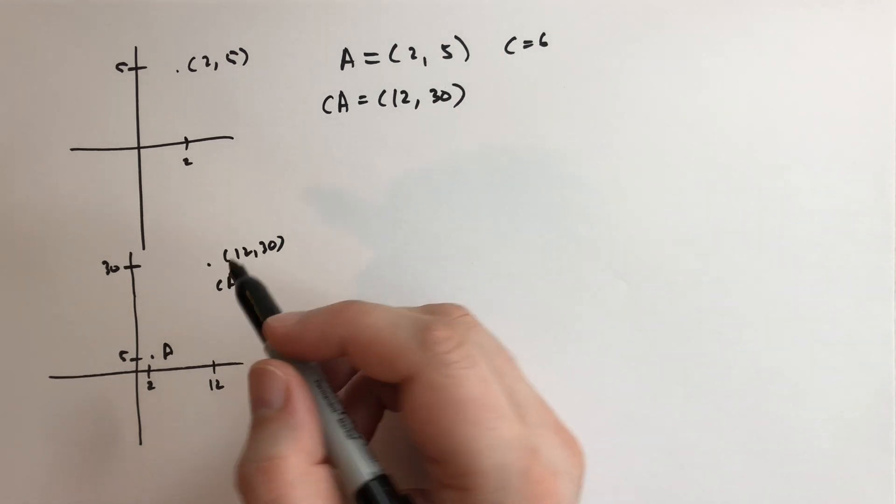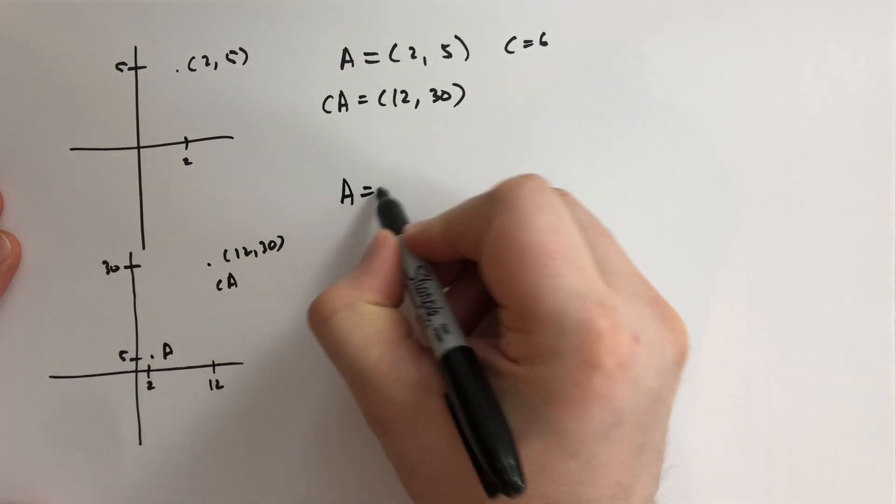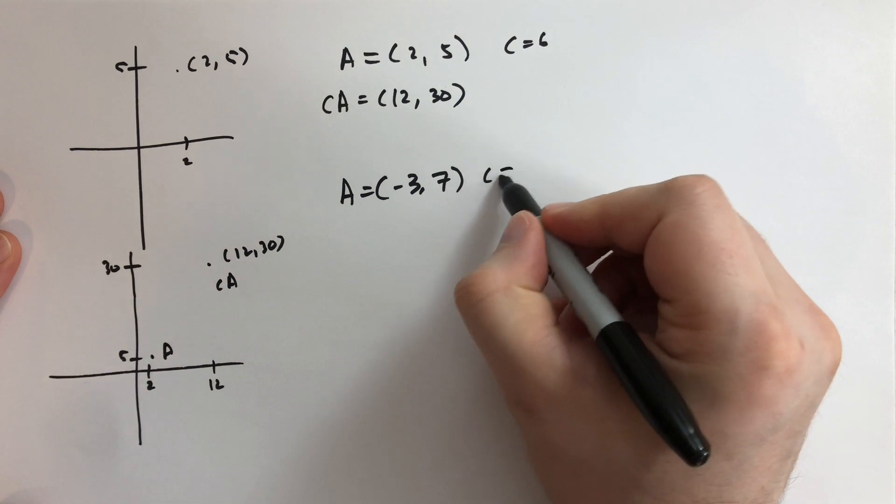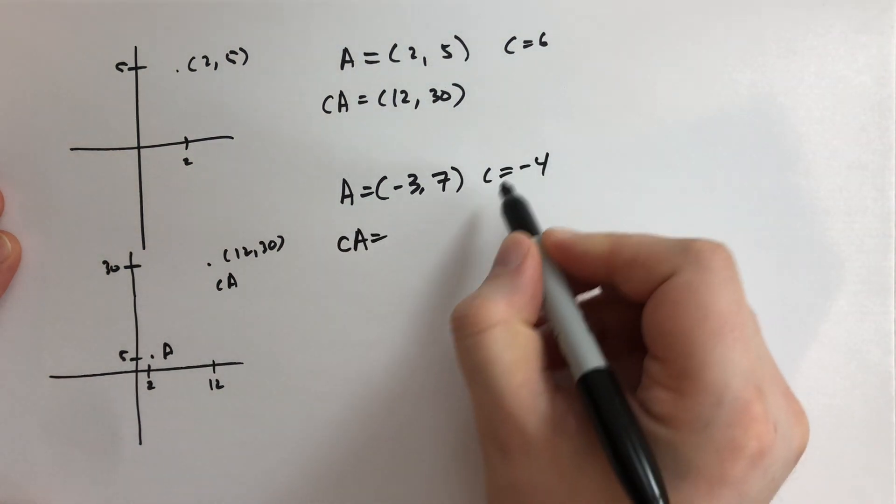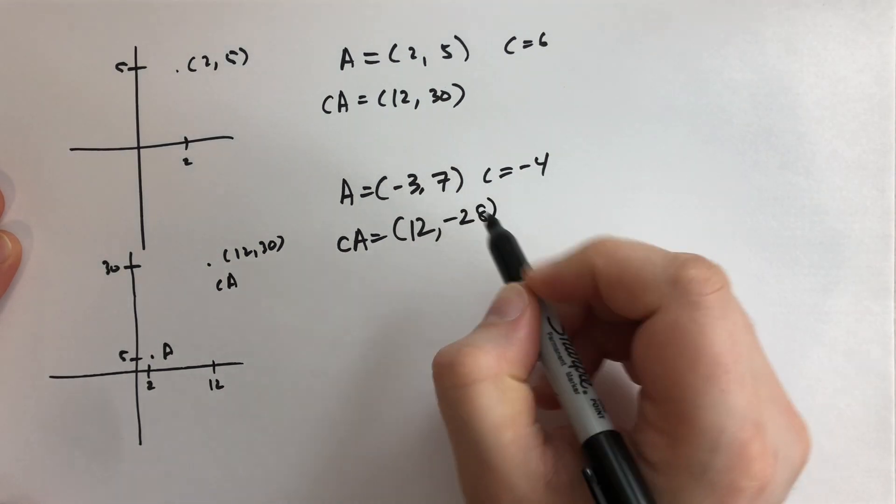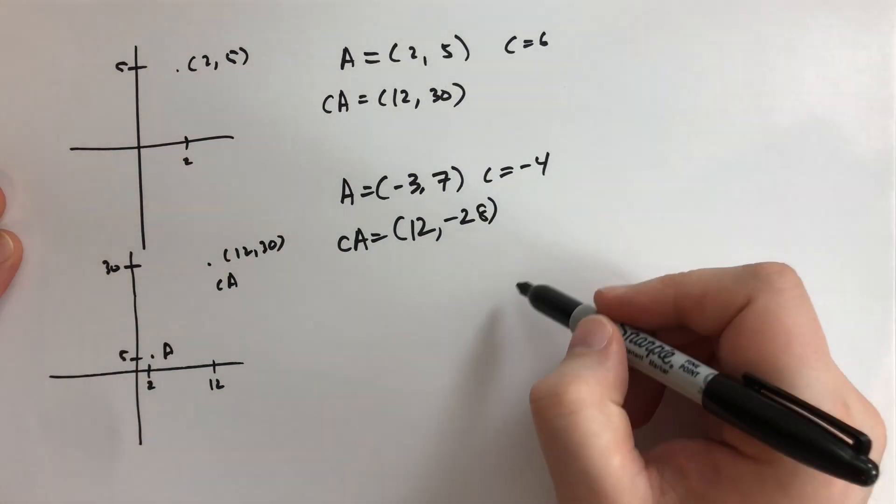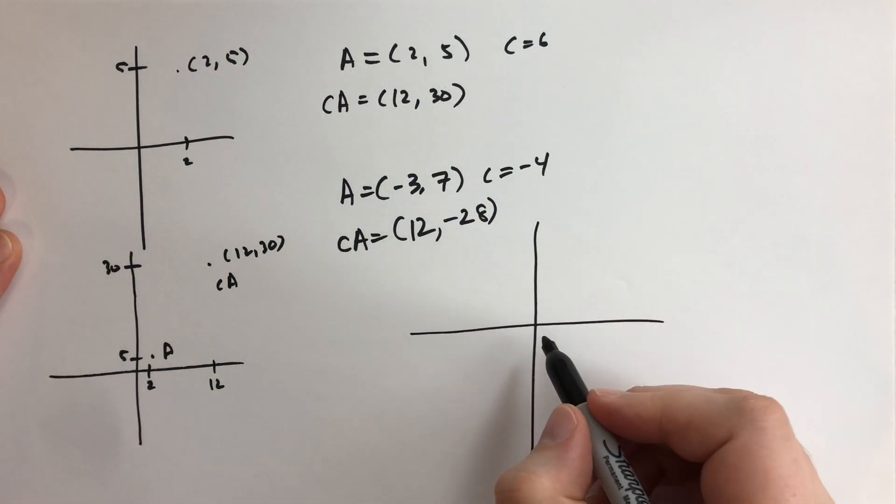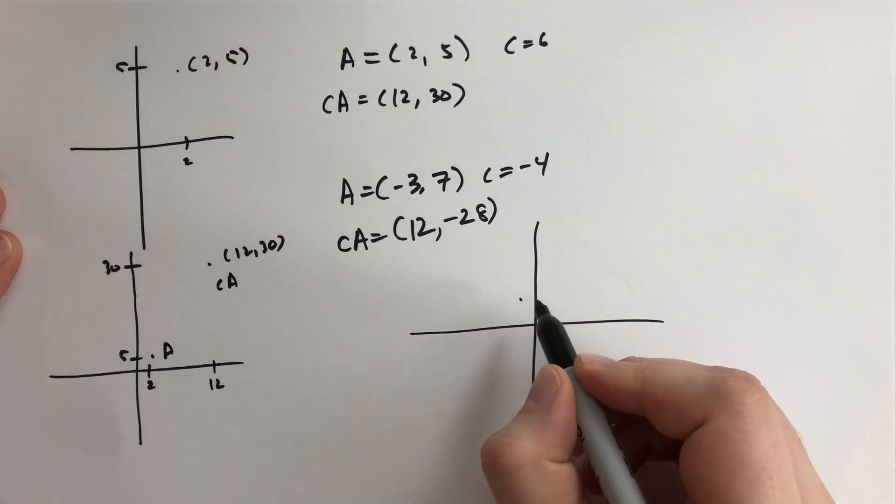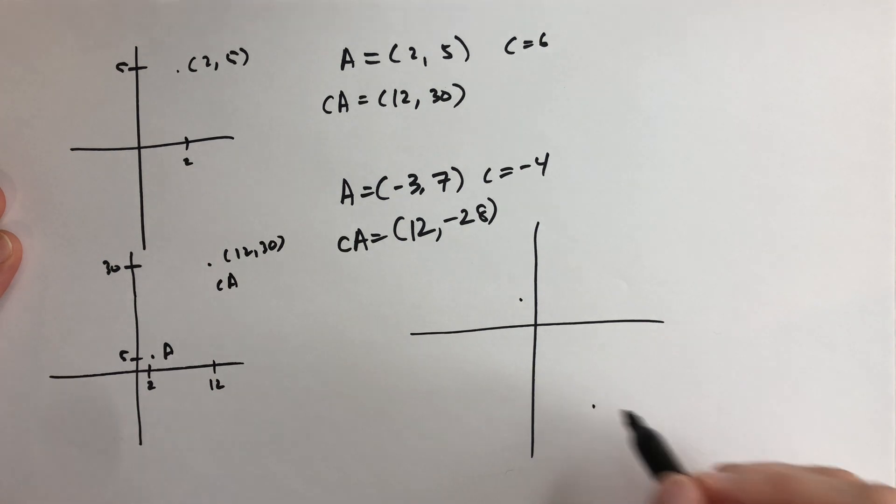Another example: A equals minus 3, 7. What if A is equal to minus 3 comma 7 and C is equal to negative 4? Then CA is equal to 12 because minus times a minus is a positive, minus 28 because minus times a positive is a negative. So we have our coordinate axes here and we're going to go minus 3 comma 7. So this is minus 3 comma 7. Let's do it smaller. Minus 3 comma 7 is there and then we are going to multiply by minus 4 and we're going to get to 12 minus 28. So it's going to be down here, minus 28. So this is A and this is CA.